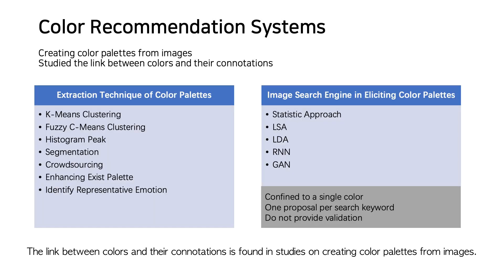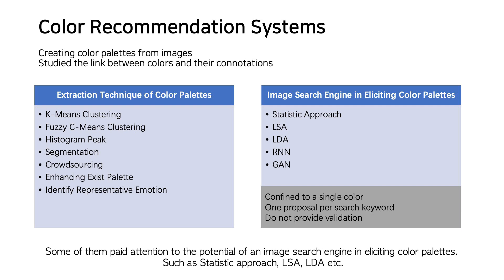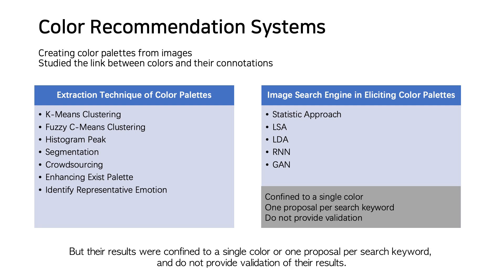The link between colors and their connotation is found in studies on creating color palettes from images. Some focus on the extraction of the color palette itself using k-means, fuzzy-c-means clustering, histogram packing, or segmentation. Others pay attention to the potential of an image search engine in eliciting color palettes using static approaches such as SA and LDA, but their results were confined to a single color or one proposal per search keyword and do not provide validation of results.